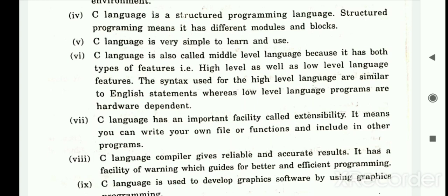C language compiler gives reliable and accurate results. It has a facility of warning which guides for better and efficient programming. When we compile a program, we can understand how many mistakes have been made.